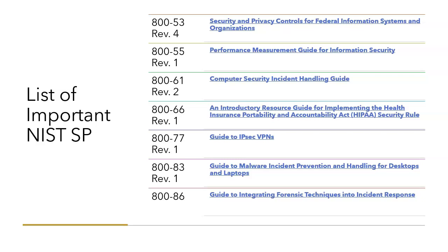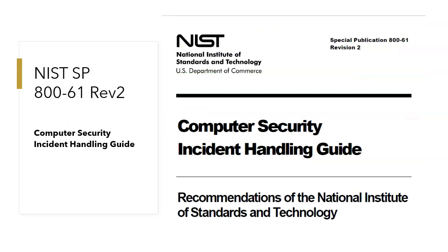The last section, Section 4, covers coordination and information sharing with outside parties or stakeholders. This covers all the key aspects of NIST SP 800-61, which is one of the 30 most important NIST documents listed in a previous video. Keep watching for more videos on NIST documents for better understanding of the information security domain. Thank you, friends.